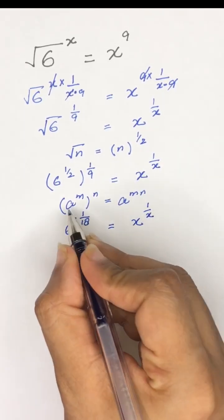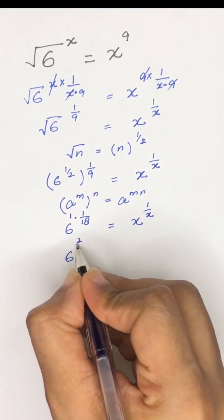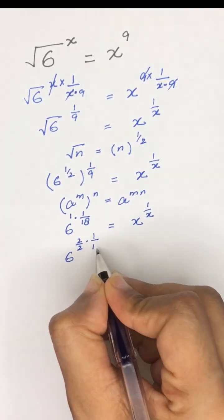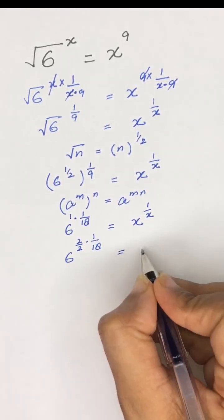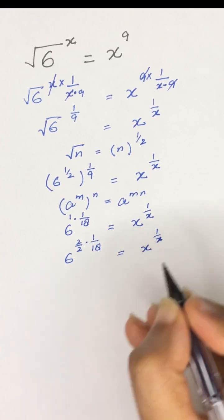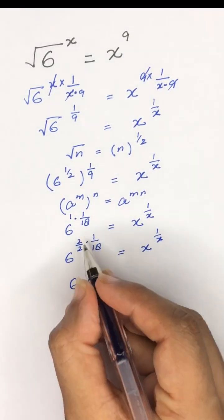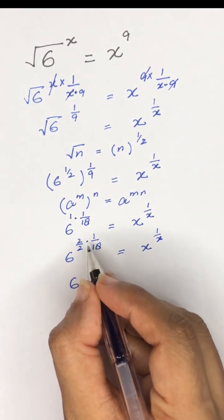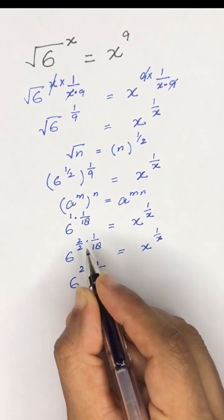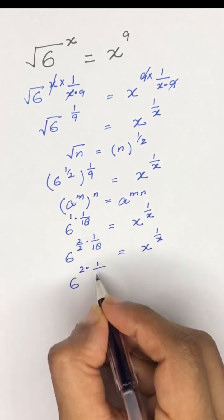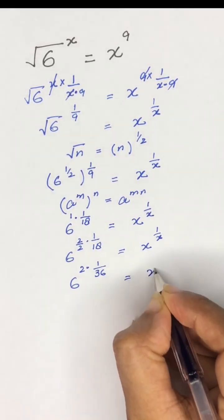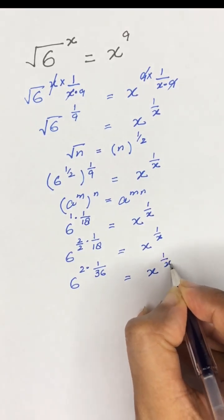Now I can write 1 as 2 divided by 2, which is the same as 1, and the right-hand side will remain the same. I will write 2 divided by 2 times 1 divided by 18 as 2 times 1 divided by 2 times 18, which gives us 2 divided by 36, and this is equal to x to the power 1 divided by x.